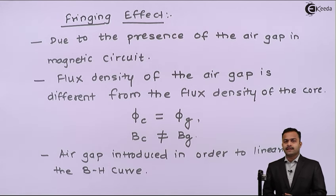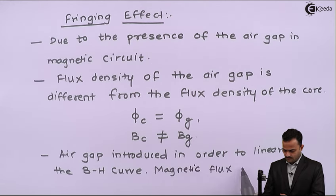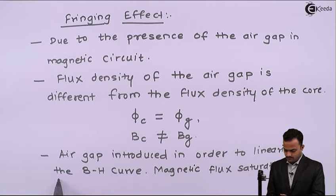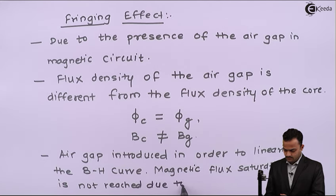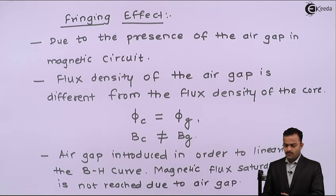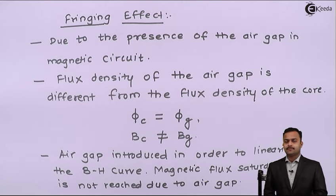For a given circuit, by reducing the flux density, saturation won't occur. This is the concept called fringing effect. Let's move to the next concept, that is leakage flux.